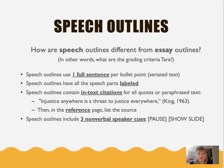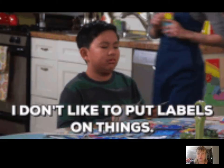First, in a speech outline, you always use one and only one complete sentence per speech part or bullet point. Please be sure not to write more than one complete sentence. Otherwise, your outline looks way more like a script than a true shell or blueprint of your speech. Remember, you're not going to write down everything you want to say, but instead a few of the main points or takeaways to help keep you organized. Number two, for that reason, in a speech outline, we label all the parts of the speech, which I'll show you in just a moment.